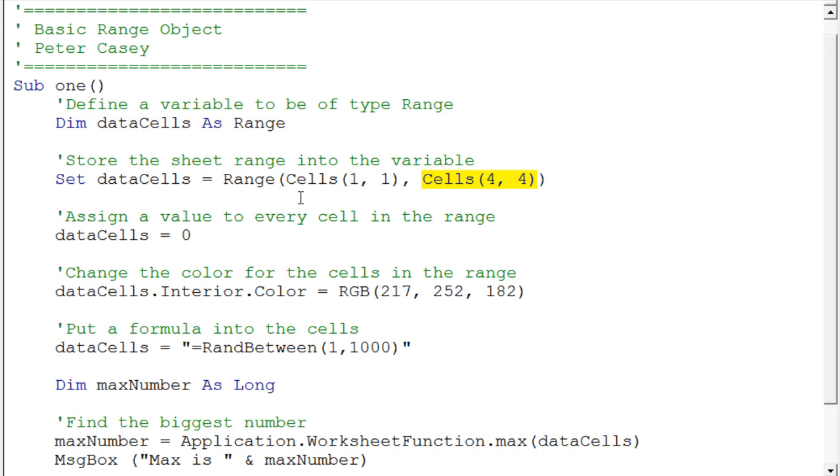So that would be D4. So this would actually select as a range object. It would create a range object of 16 cells. And all of them would then essentially be stored, that range would be stored into this variable.